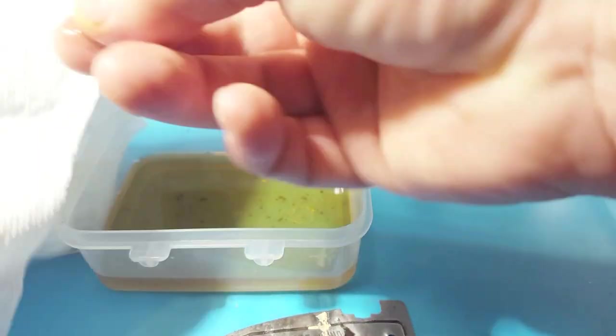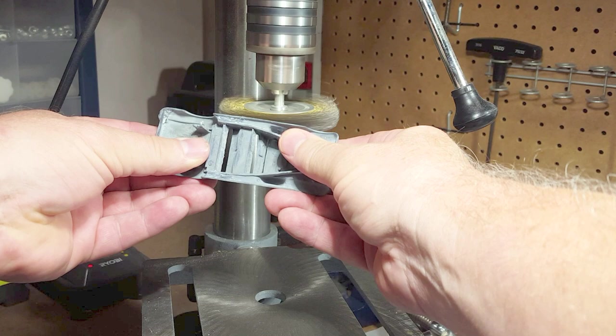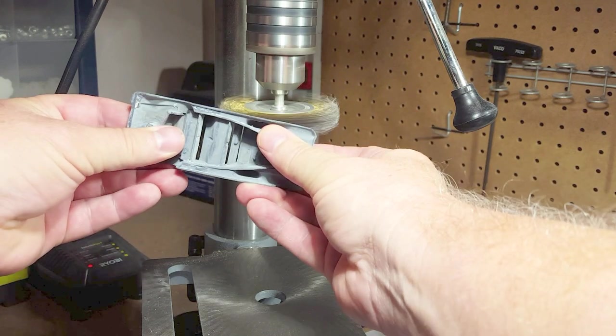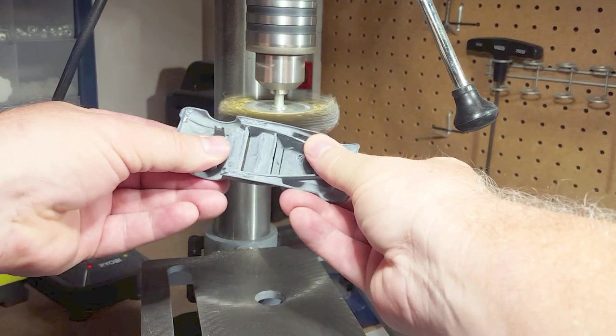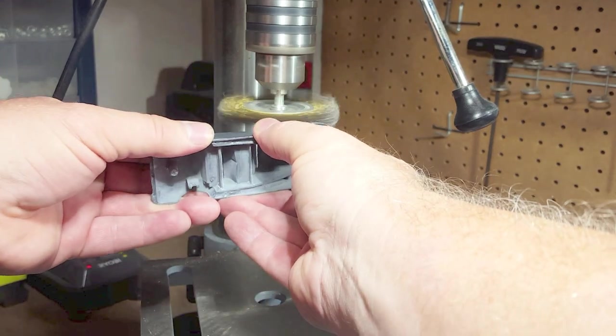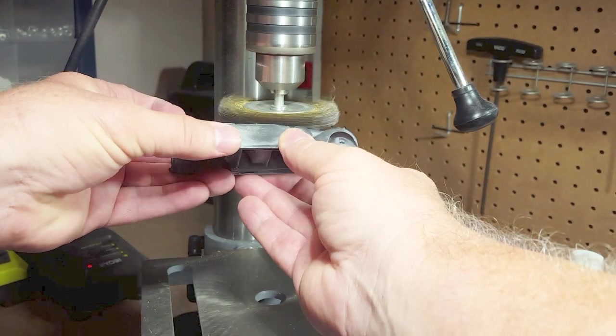There's the base with the rust removed and that little nail that holds the steering wheel in. First step, I'll smooth out the finish with the wire wheel.